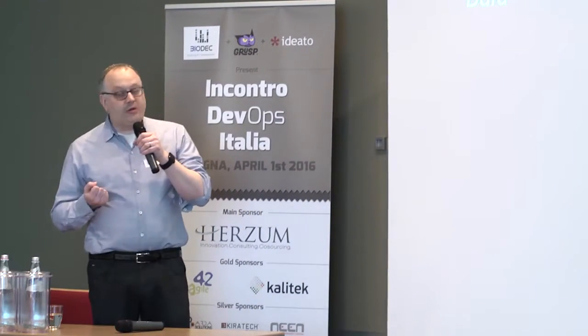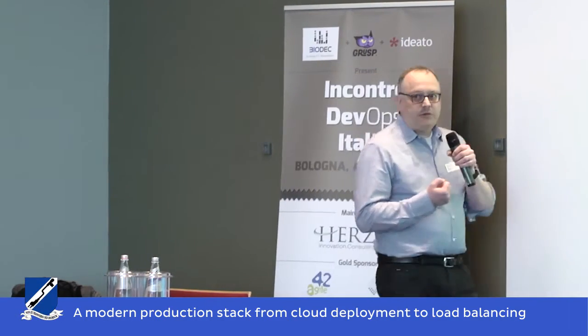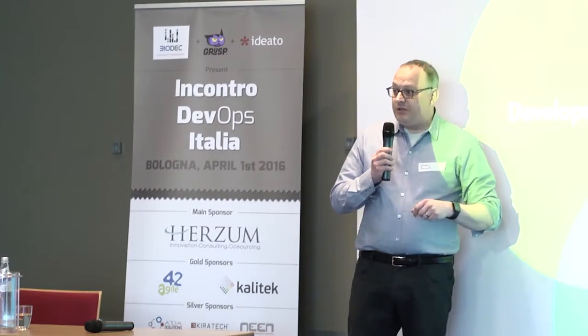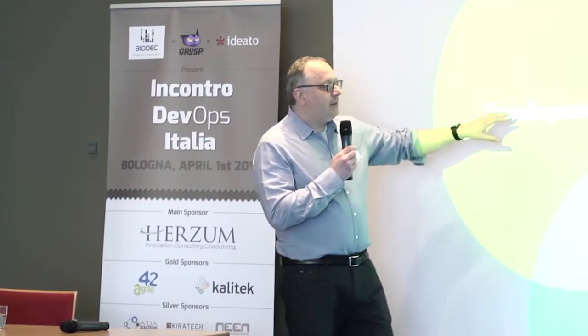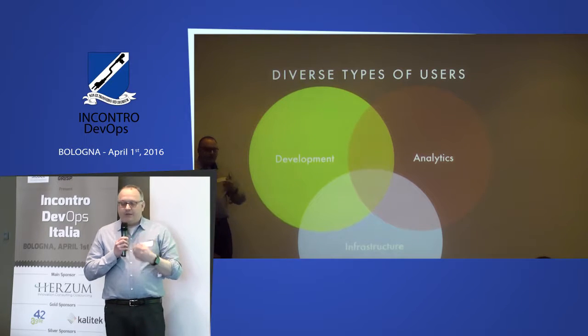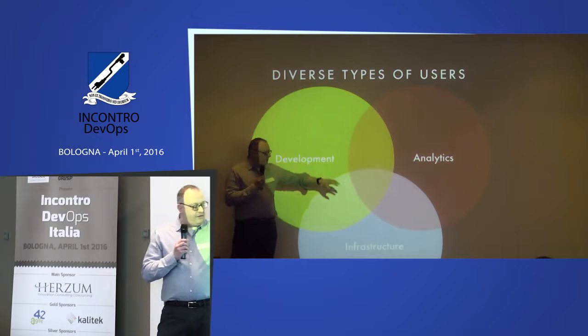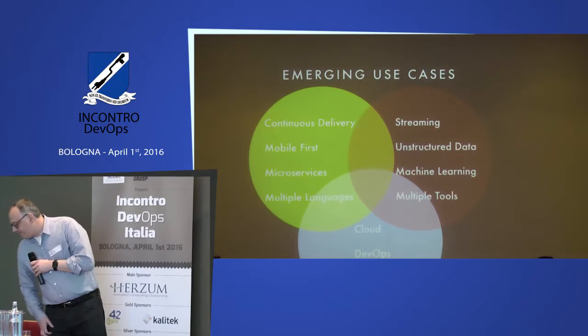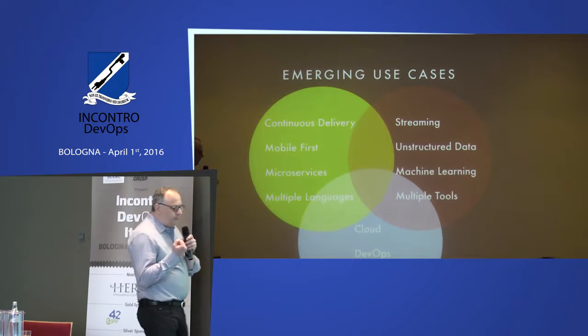Before we talk about our architecture, I want to talk about who our users are. When we go talk to companies, there are usually three groups of folks in the room. We need to understand that different users have different needs and use completely different types of software. If you design something for just one group, it tends not to permeate and you get silos in your organization. The three groups are developers, analytics teams, and infrastructure engineering.